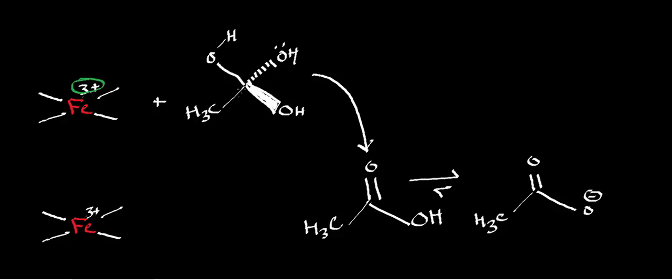And now what we essentially have is a trihydroxylated 2-carbon hydrocarbon. So this is ethane 1-1-1 triol. Let's write that down. This is an intermediate, but it is ethane, and the way we designate it is 1, 1, 1, and then triol.